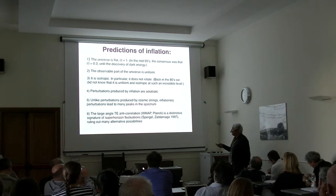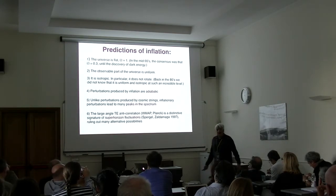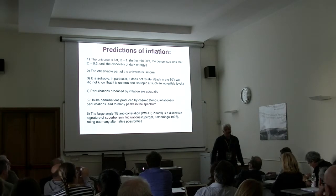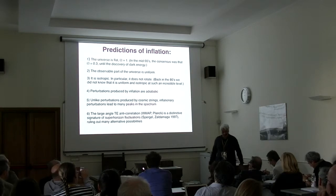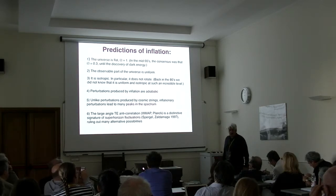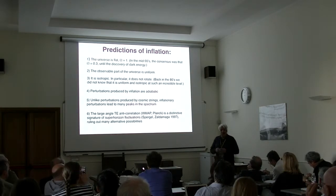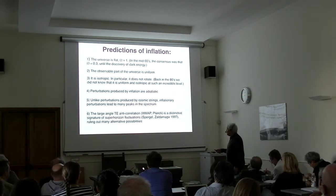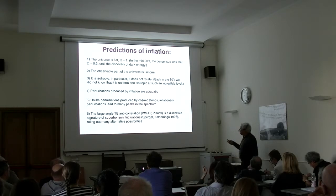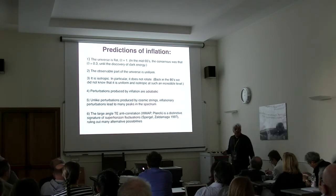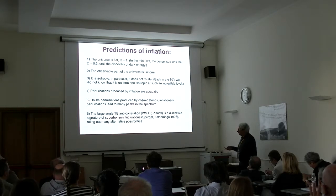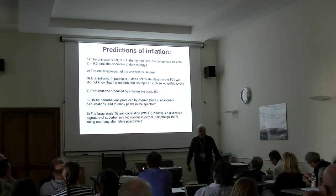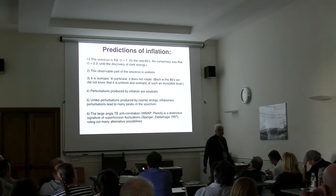The universe is isotropic. The obvious question was: planets rotate, galaxies rotate — why don't we see rotation of our universe? Inflation explains this because the universe, like a ballerina spreading her arms, slows its rotation while conserving angular momentum. We now know the anisotropy is extremely small. Perturbations produced by inflation are adiabatic.